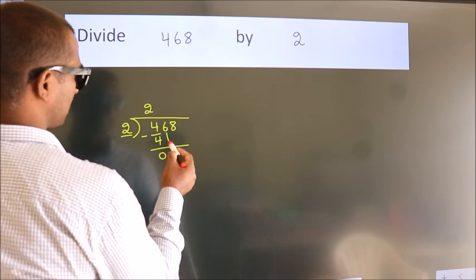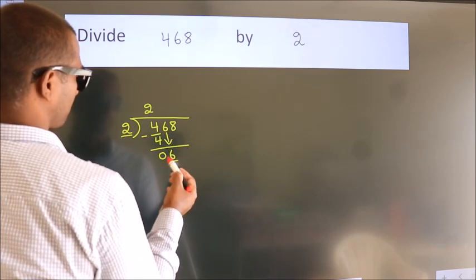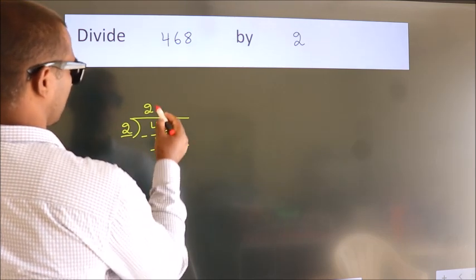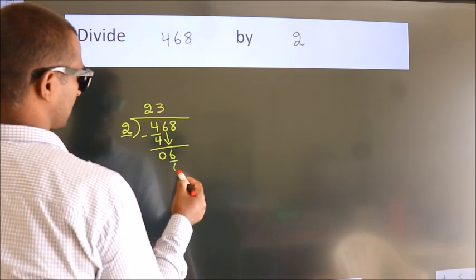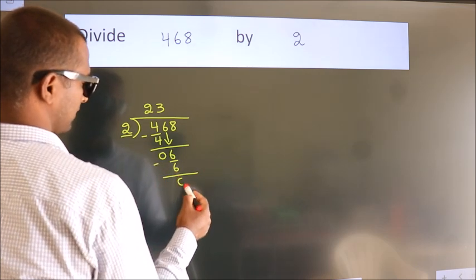After this, bring down the beside number. So 6 down. So 6. When do we get 6? In the 2 table. 2 times 3 is 6. Now we subtract. We get 0.